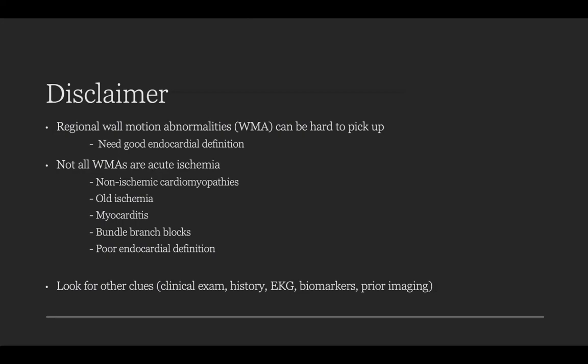Not all regional wall motion abnormalities represent acute ischemia. They can be sequelae of old ischemia, or secondary to non-ischemic cardiomyopathy such as sarcoidosis, amyloidosis, stress-induced cardiomyopathy, myocarditis, bundle branch block, or simply poor endocardial definition. This is where you need to incorporate other clinical clues — physical exam, history, biomarkers, or previous imaging — because a previously present wall motion abnormality is likely chronic rather than new ischemia.